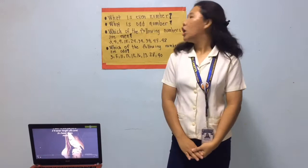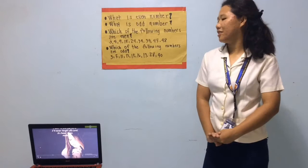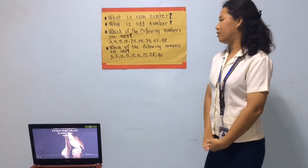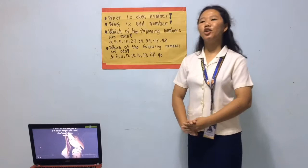Okay, class. Let us review our lesson yesterday. What is an even number? A number which is divided by 2. Correct. What is an odd number? A number which is not divided by 2. Which of the following numbers are even? 4, 24, 34, 48. Correct. Which of the following numbers are odd? 3, 5, 11, 13, 15, 17. Very good, class.